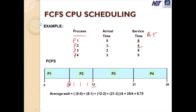After P3 completes, P4 gets its chance. P4 arrived at 3 milliseconds and waited until 21 milliseconds. P4's service time is 5, so it executes from 21 to 26 milliseconds. Now we calculate the average waiting time. For P1: start time 0 minus arrival time 0 = 0. For P2: start time 8 minus arrival time 1 = 7. For P3: start time 12 minus arrival time 2 = 10. For P4: start time 21 minus arrival time 3 = 18.